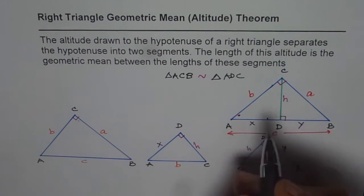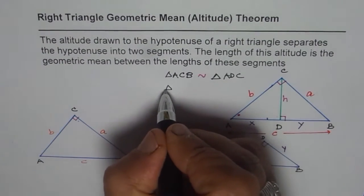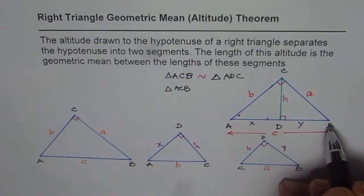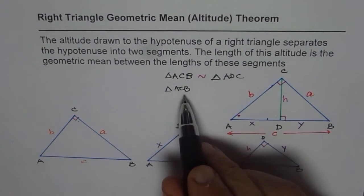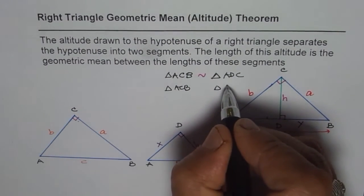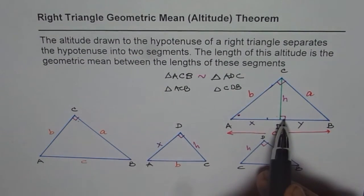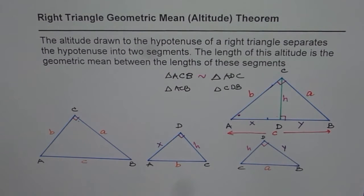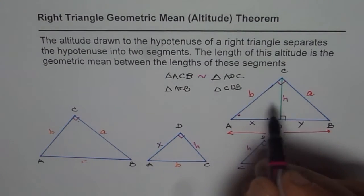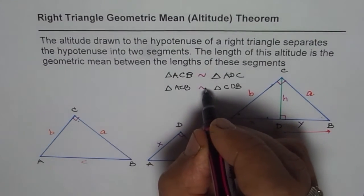Now if we compare triangle ACB with the other smaller triangle, we will write CDB, triangle CDB. The reason is the right angle is C, and in this triangle also the right angle is D. So you will observe that here we have one right angle, and angle B is common. Therefore, these two triangles are also similar.